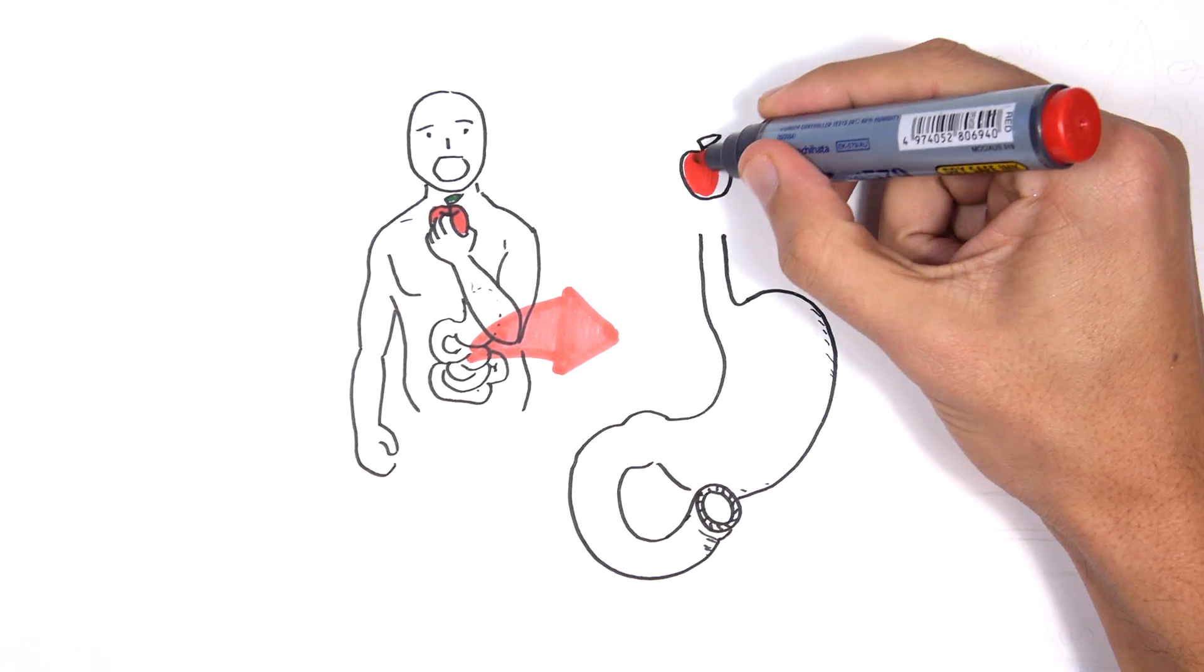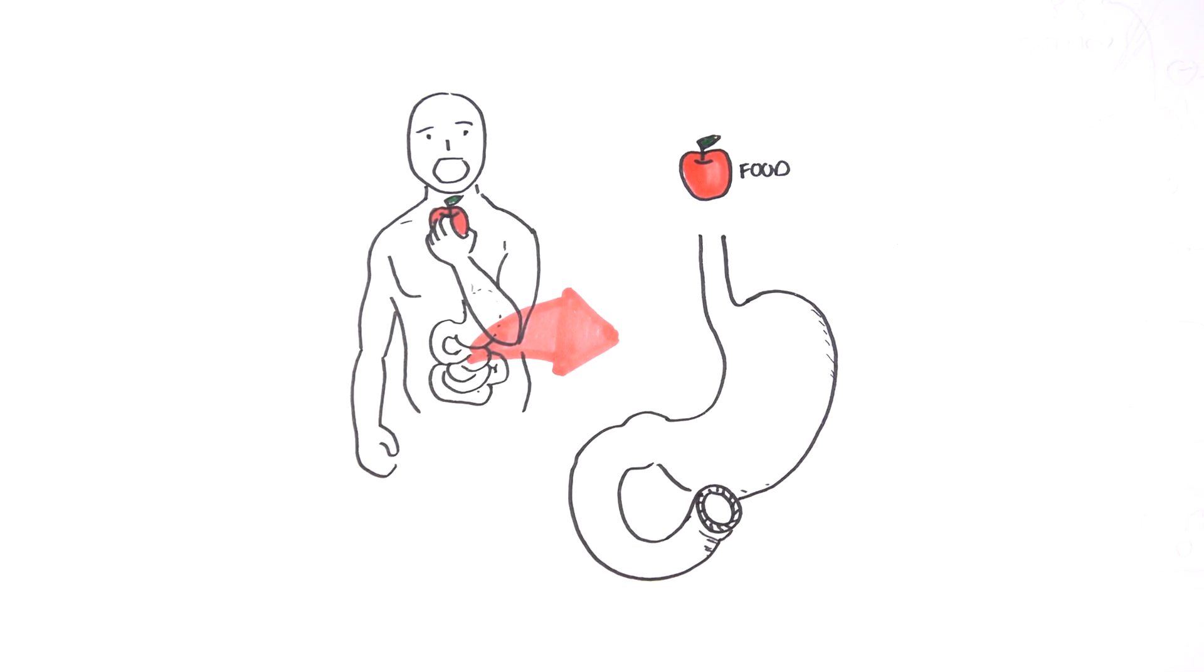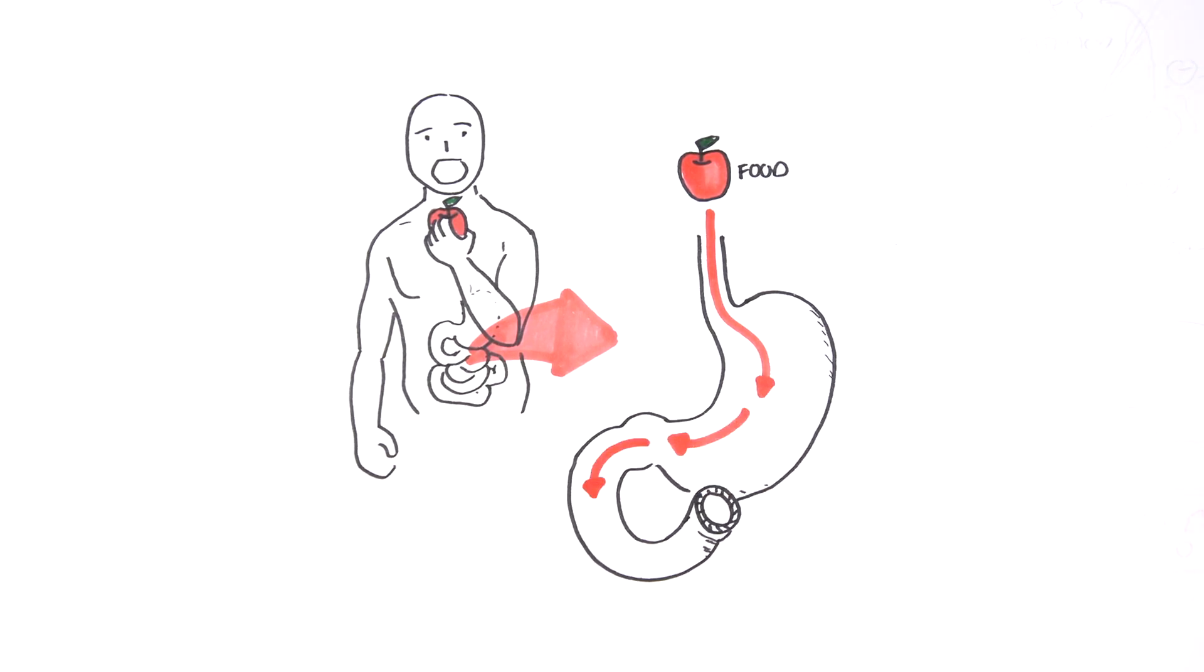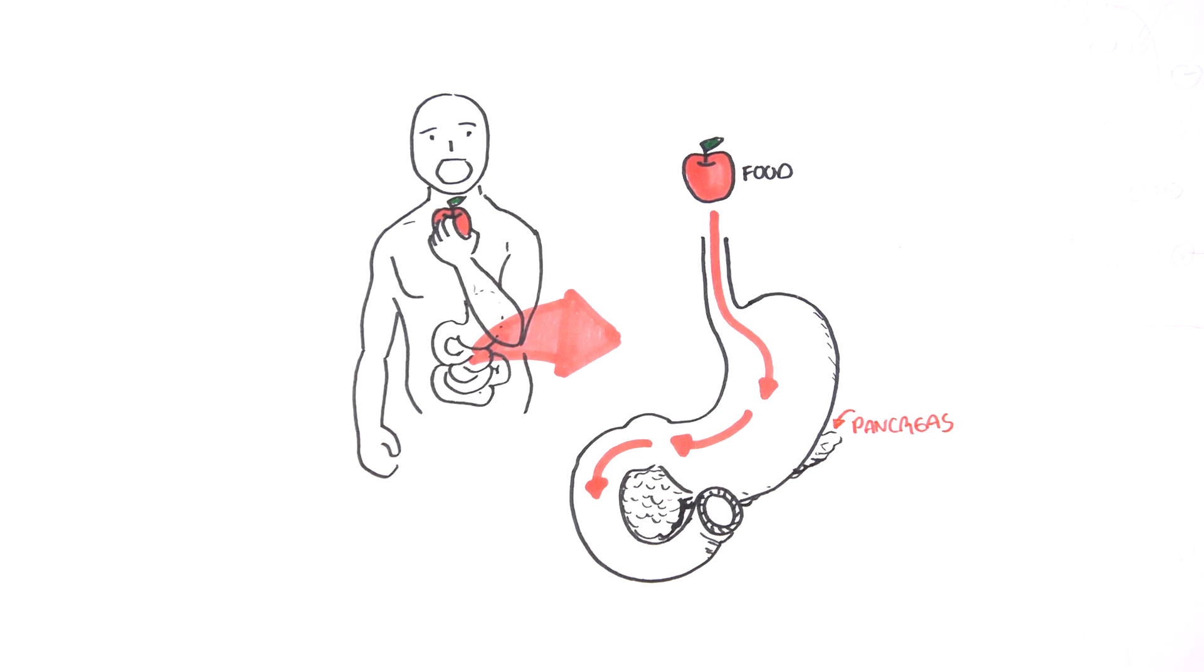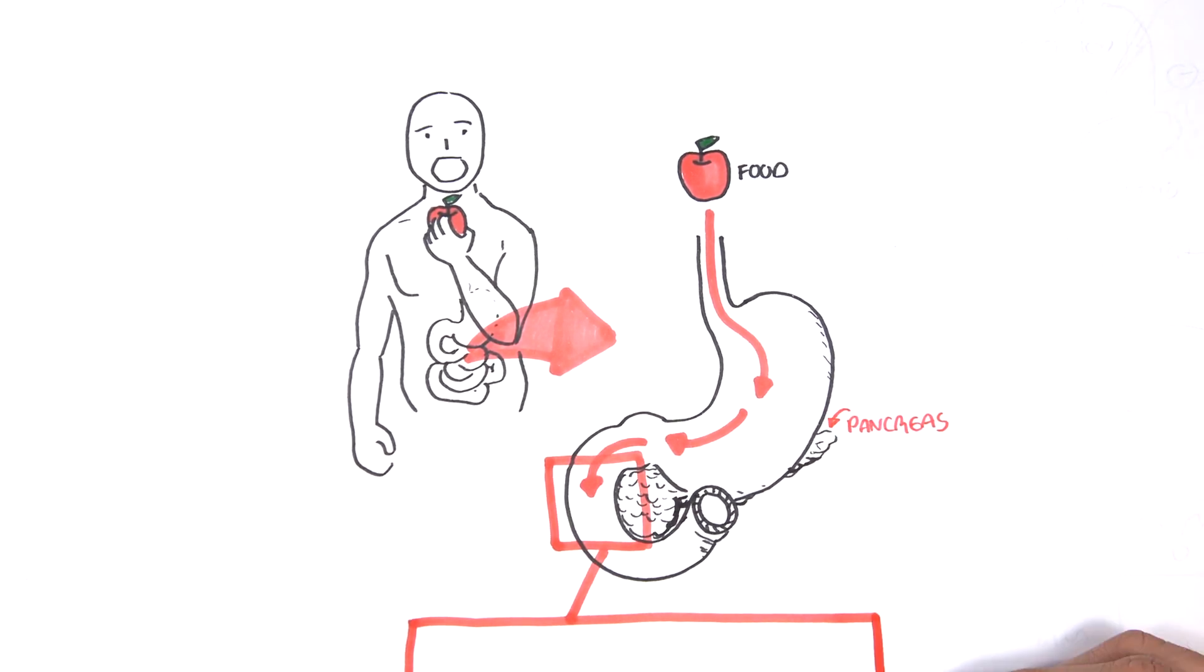Here, the bite of the apple travels through the stomach and into the small intestine. Right next to the small intestine and stomach, we can find the pancreas. Let us zoom into this area here.